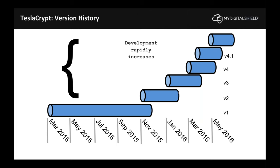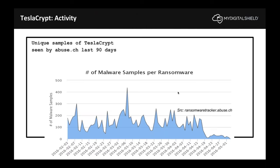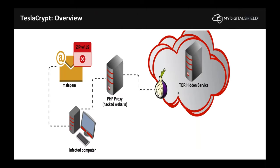What was fascinating watching TeslaCrypt was the rate of development — the authors rapidly released new versions in response to researchers finding problems, adding features and functionalities quickly. This speaks to the rise in sophistication: they're starting to operate ransomware as a professional software development firm, with bug fixes, QA testing, and rapid releases. TeslaCrypt is still very active, with a spike in March, though it's beginning to trail as other ransomware families start to take its place.